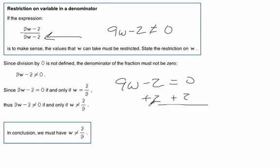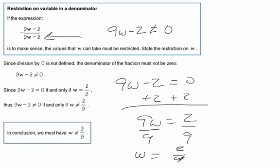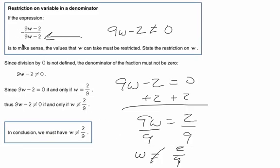We add 2 to both sides. 9w equals 2, divide by 9. And we get w is 2 ninths, but it actually cannot be 2 ninths, and that's our answer.